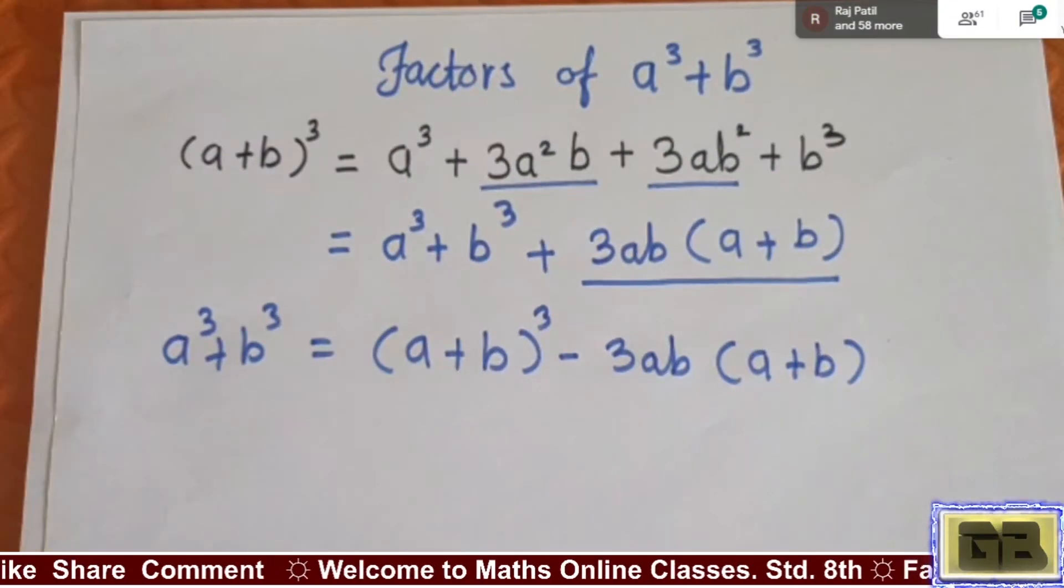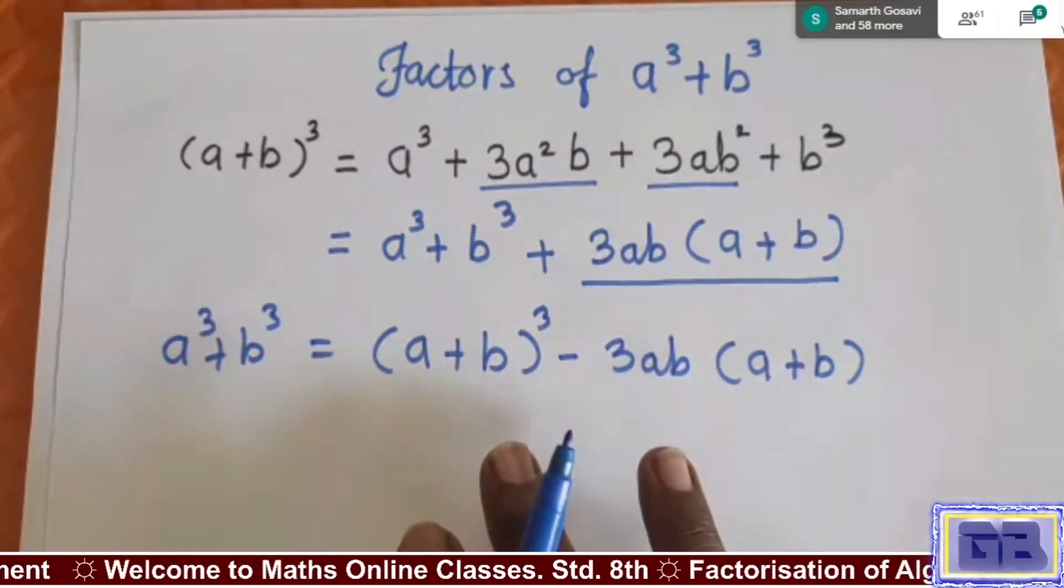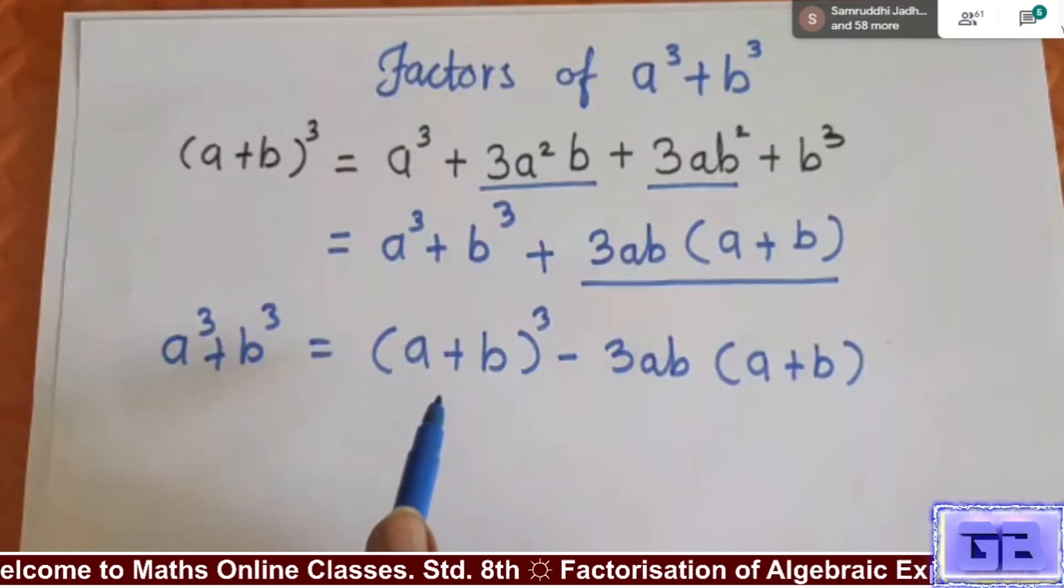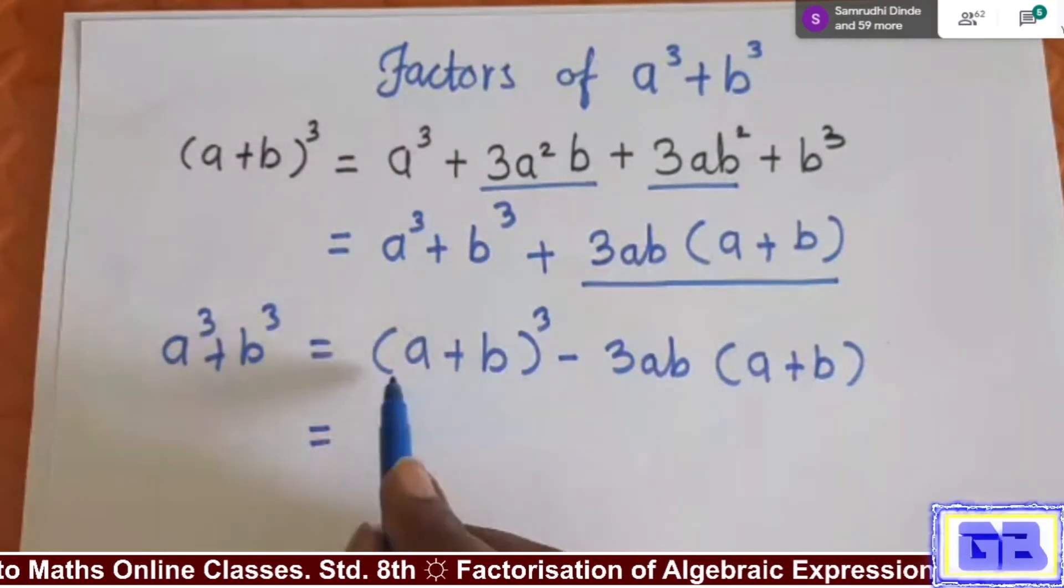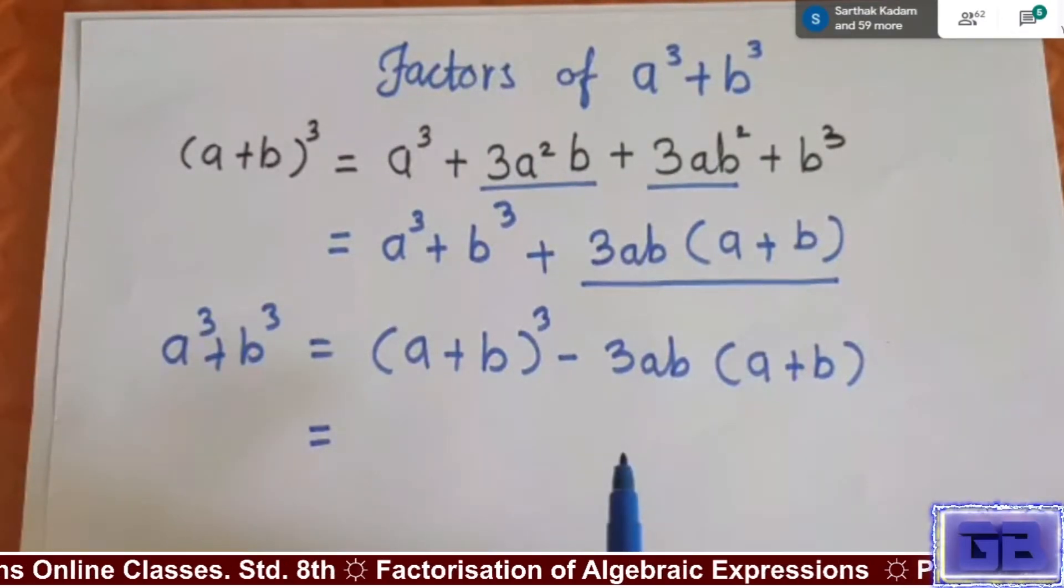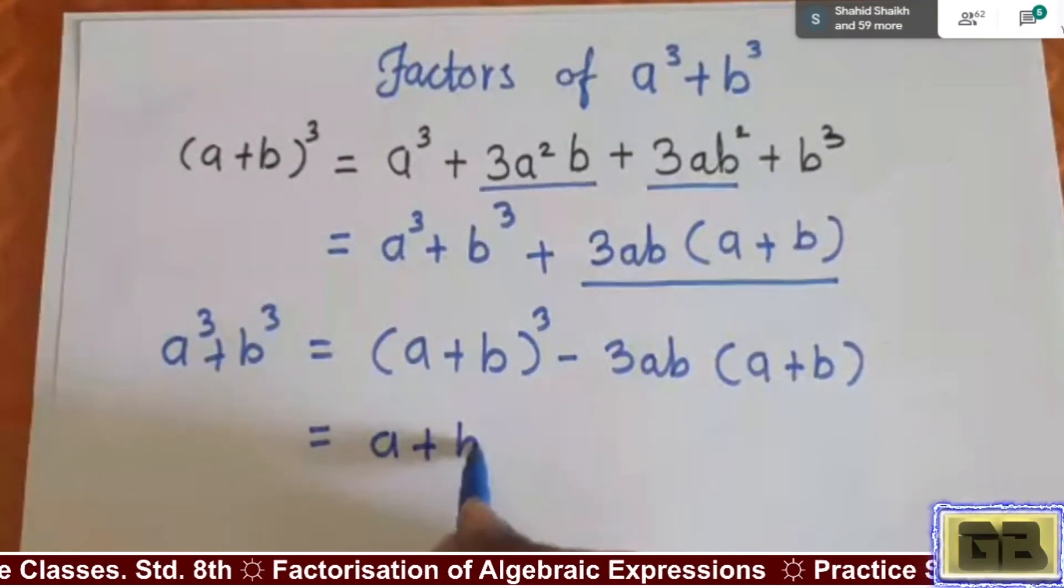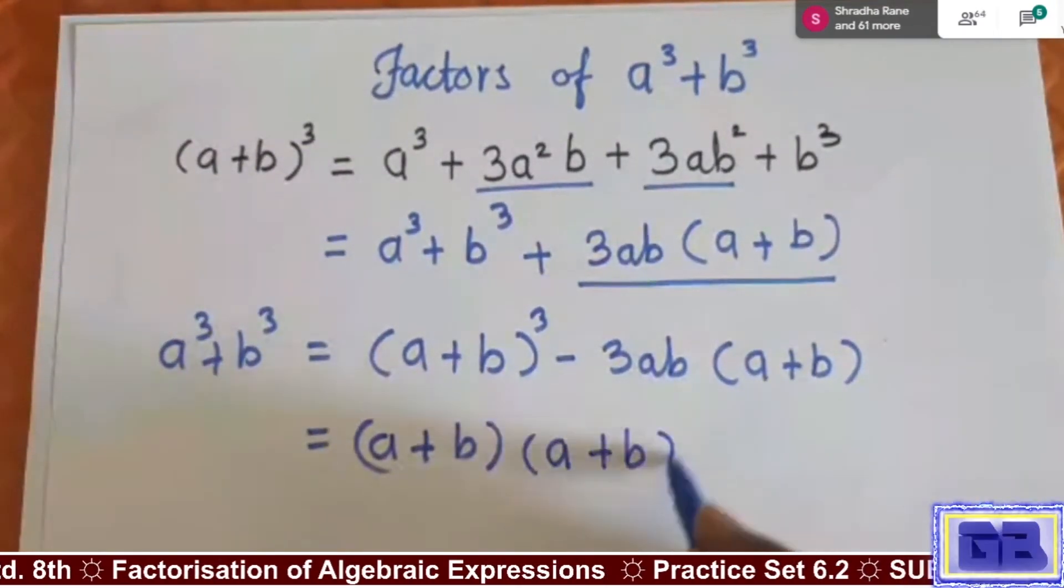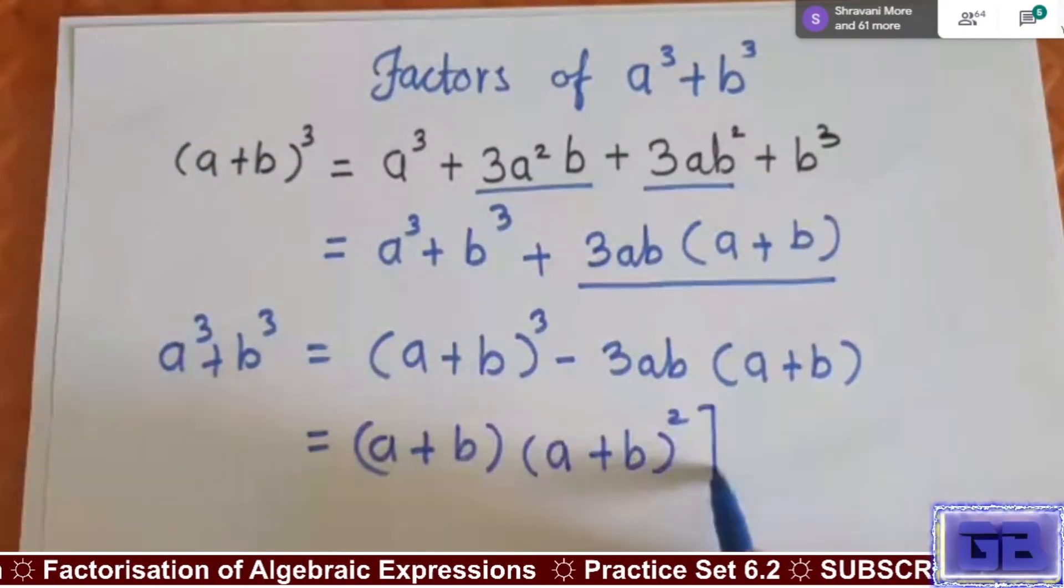So this expression we got. Now what next arrangement we have to do? (a+b)³ we have to split. We know that here cube is there, it means this bracket appears three times in multiplication form. So I will write (a+b) and in second bracket (a+b)² I will take it in square bracket.